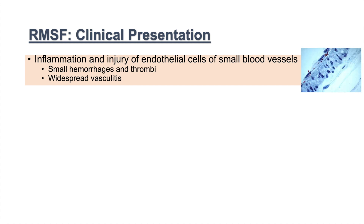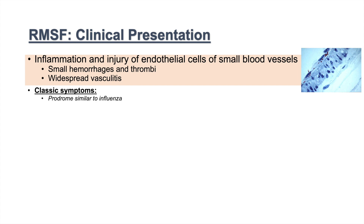Here's an image of Rickettsia rickettsii within endothelial cells — these little red dots here. The classic symptoms of Rocky Mountain Spotted Fever are a prodrome similar to influenza: the first classic symptom is fever, the second is headache, and the third is a rash — spotted for rash, and the fever.